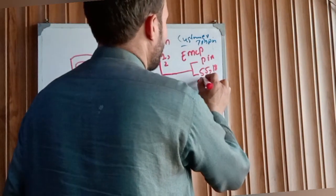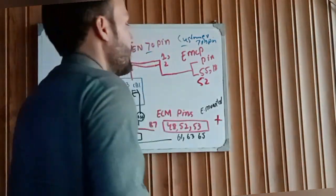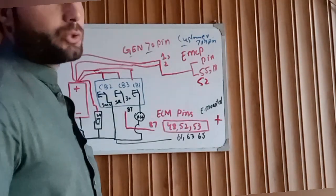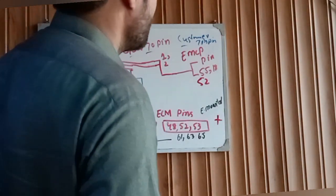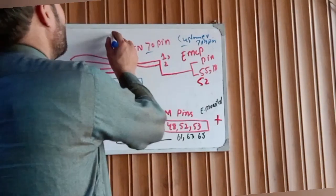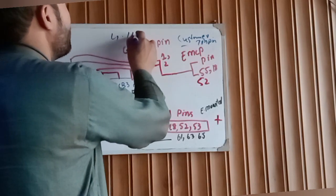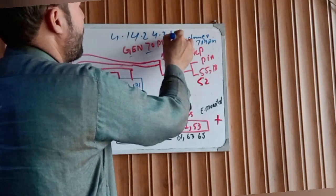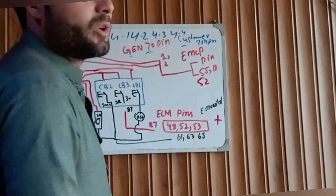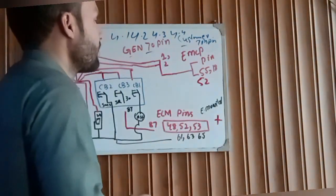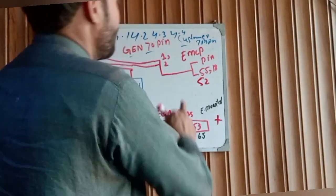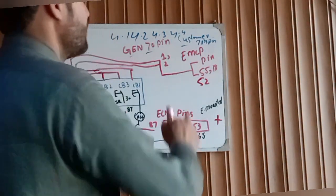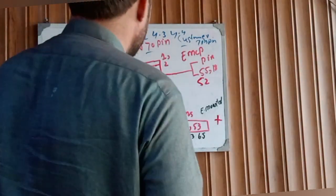And also pin 52. This is the EMCP controller positive input. EMCP 4.1, 4.2, or 4.3, 4.4, all are same. Now we need the negative supply for this controller.